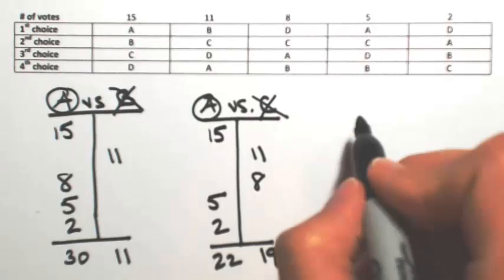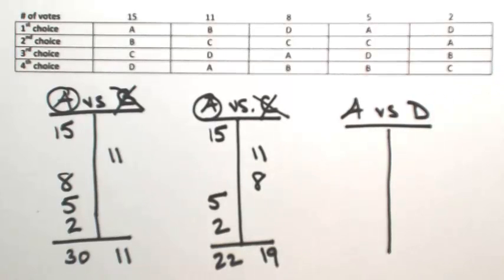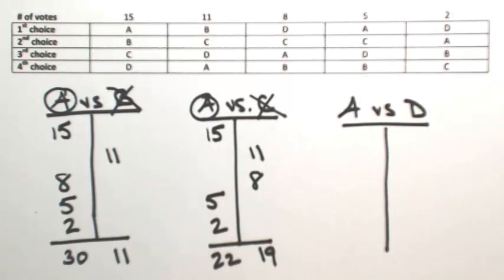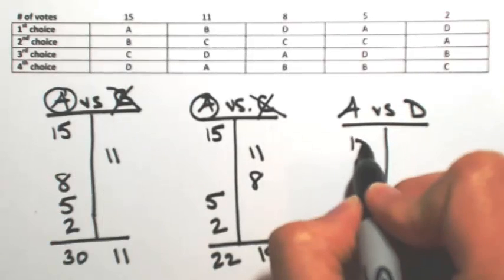So let's see what happens when we do A versus the last one, which is D. So if A wins this competition, A is the Condorcet winner. In the first column, A is over D, so A gets 15.